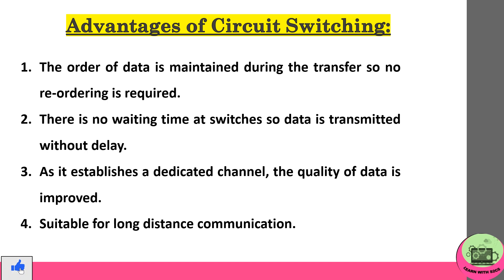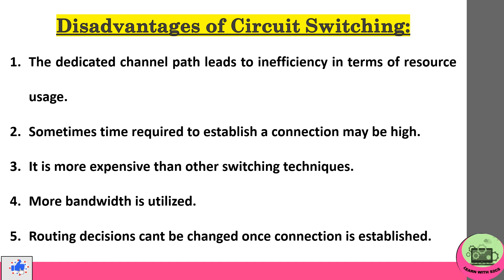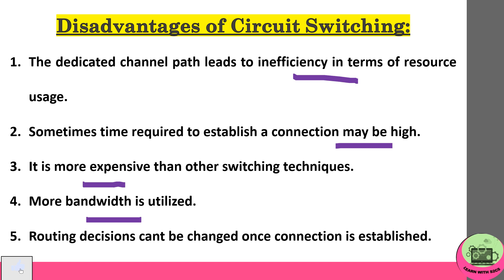Advantages of circuit switching: the order of data is maintained during the transfer, so no reordering is required. There is no waiting time at switches, so data is transmitted without delay. As it establishes a dedicated channel, the quality of data is improved, and it is suitable for long-distance communication. Disadvantages: as it uses a dedicated channel path, it sometimes leads to inefficiency in terms of resource usage. Time required to establish a connection may be high. It is more expensive compared to other switching techniques, more bandwidth is utilized, and routing decisions can't be changed once the connection is established.